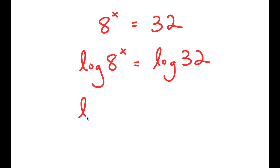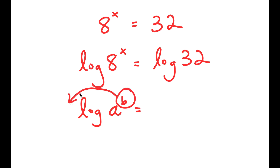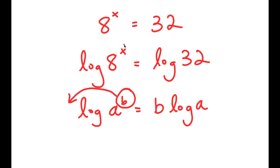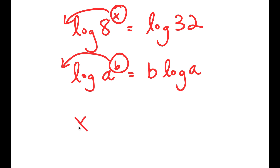Now, if I have something in the form log of a to the power of b, I can move b to the front of the logarithm — so log of a to the power of b is equal to b times log a. In the case of log 8 to the power of x, we can think of x as b, so we move x to the front: x times log of 8 is equal to log of 32.